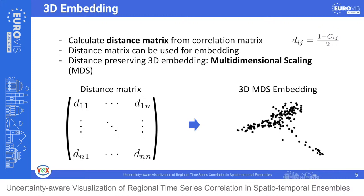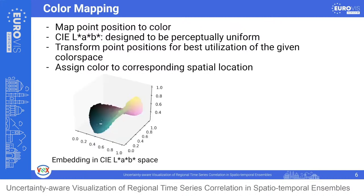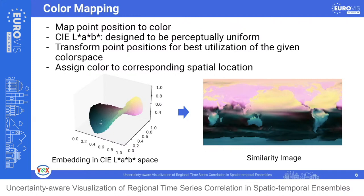We use the distance matrix to create a 3D embedding which we can directly map to colors. As distances in the embedding should represent distances in high-dimensional space, we choose multidimensional scaling as a dimensionality reduction technique. The 3D embedding shows the correlation of sample points but does not contain spatial information. We map each embedded point position to a color in the Scilab color space, which is designed to be perceptually uniform — Euclidean distances in the color space correspond to perceptual differences. We translate and rotate the embedded points for best utilization of the given space, then assign each color to its corresponding spatial location, obtaining the similarity image.